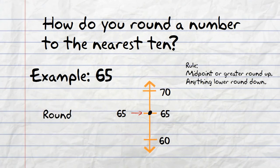If a point falls on the midpoint or greater than the midpoint, you would round up to the next nearest 10. Therefore, 65 rounded to the nearest 10 is 70.